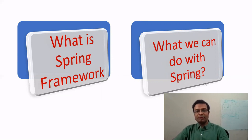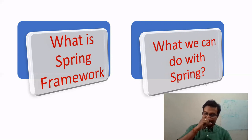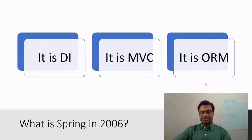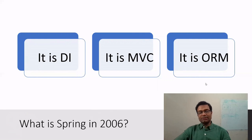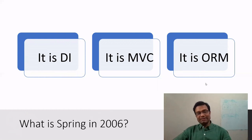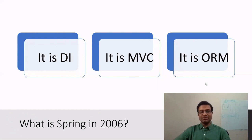To overcome all these problems, Spring came into the market almost two decades back and solved a lot of things. When it came into the market around 2006, Spring had only DI (dependency injection), MVC, and ORM (object relational mapping). You could use Hibernate to connect to a database and change any database without much changing the code. The benefit was that it made life easy for any developer, providing ready-made templates for logging, transactions, and security.